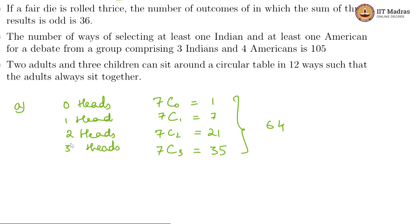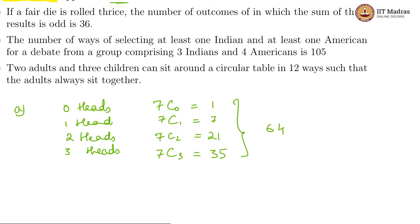Now, for the second part, if a fair die is rolled thrice, the number of outcomes in which the sum of the three results is odd. So, the sum of the three results should be odd, which means let us call these results R1 plus R2 plus R3 and this is odd.